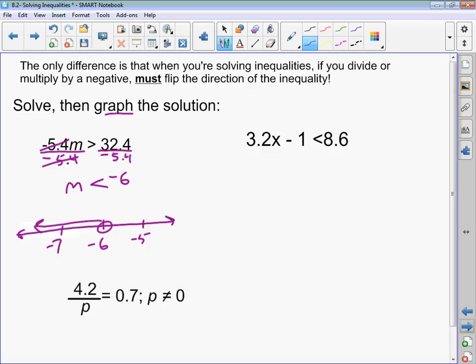So 3.2x minus 1 is less than 8.6. What would you do first, Georgia? Add 1. Perfect. So it's 3.2x less than 9.6. And now what would I do, Brooke? Divide by 3.2. It's 3. Ian, would the inequality change directions? No, because I didn't divide by a negative number. So it's still going to be less than 3. Open or close circle? Open because it can't be equal to. And then the direction it goes is left.